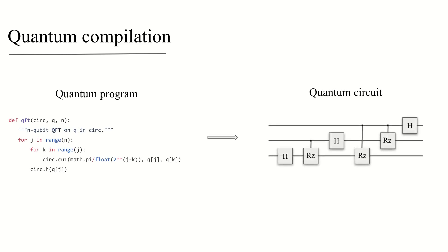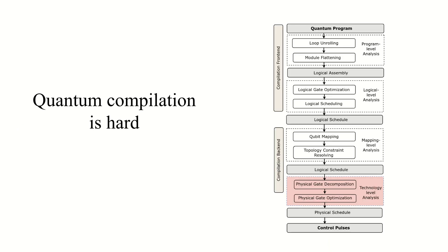Quantum compilation is the process of decomposing quantum algorithms written in high-level languages into circuits that can be run on hardware. Quantum compilation is a difficult task because it has many stages and each stage involves solving a hard optimization problem.